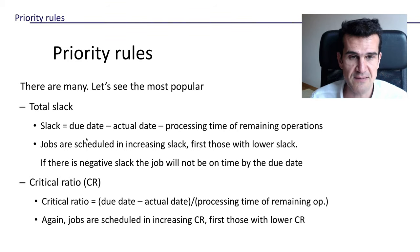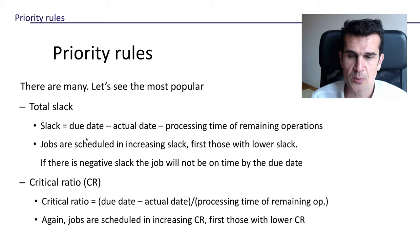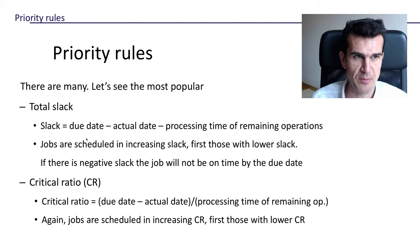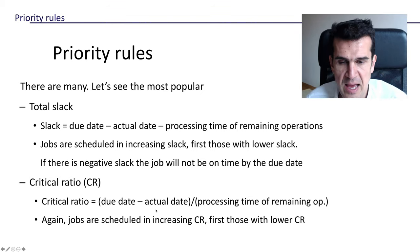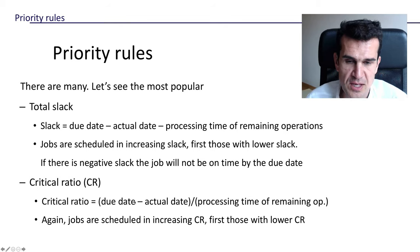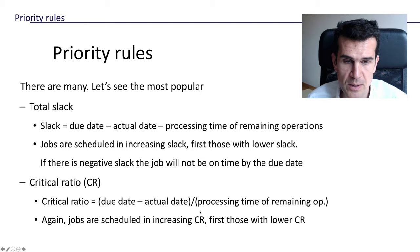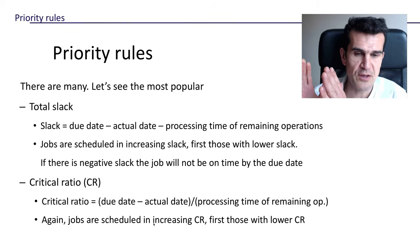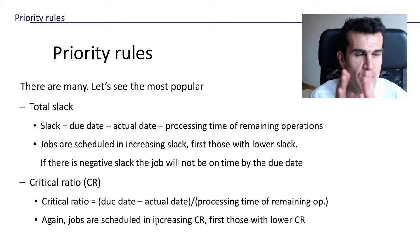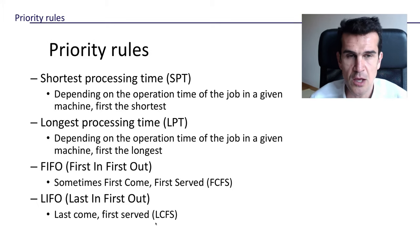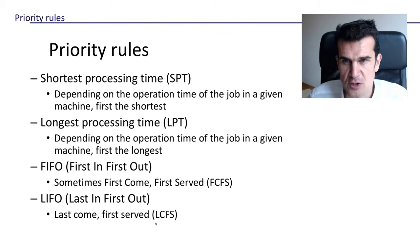Naturally, if a job in the queue already has negative slack, it will not be delivered on time. The critical ratio priority rule is extremely similar to total slack, but instead of looking at slack in absolute terms we look at it in relative terms — we divide the time we have to finish the job by the time we need. If this number is less than one, we're going to be late. The idea is the same: sort jobs in increasing order of critical ratio and deal with those with the lower critical ratio first.